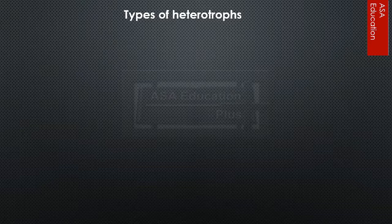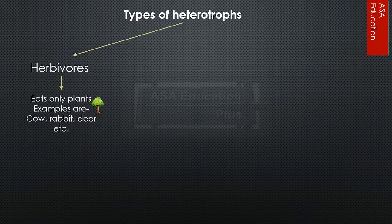Types of heterotrophs. Herbivores eat only plants. Examples are cow, rabbit, deer, etc.